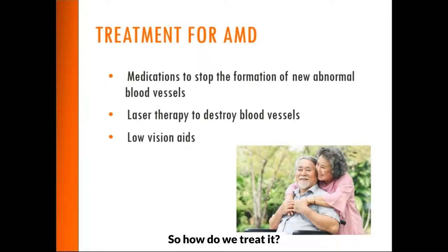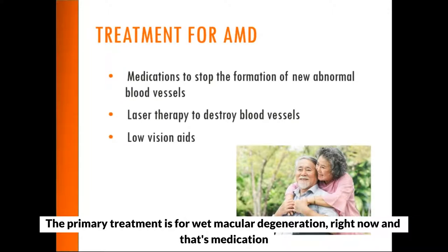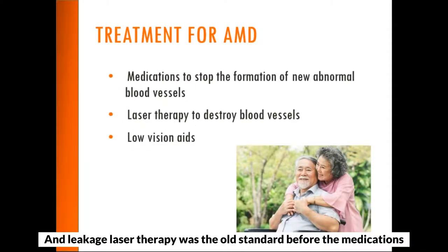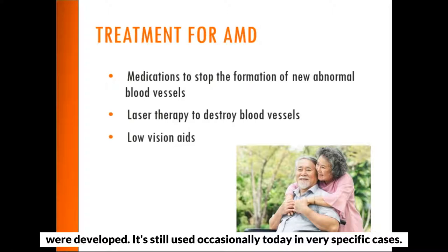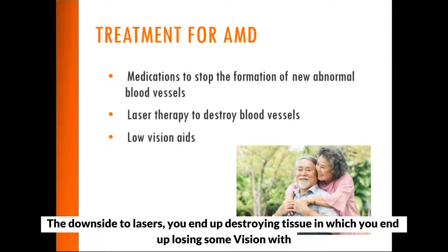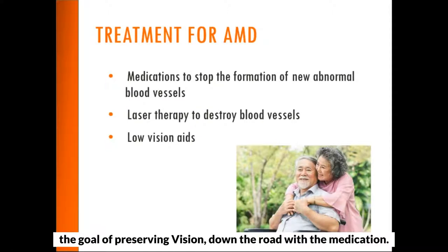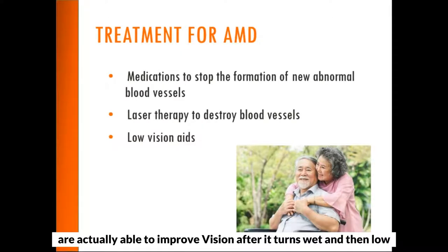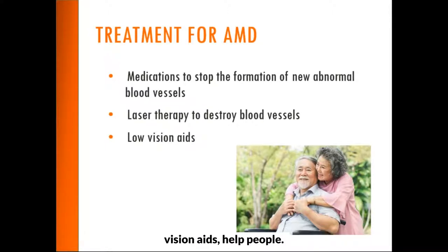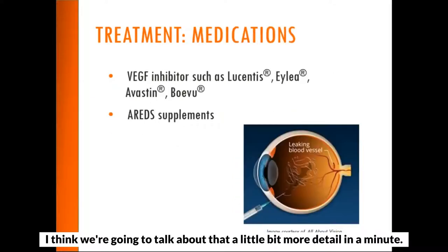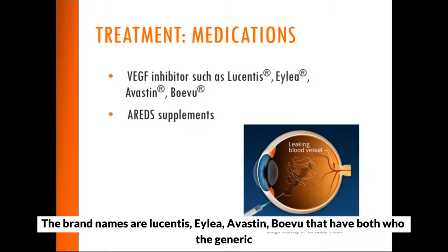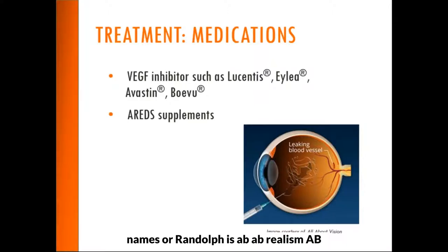The primary treatment right now is for wet macular degeneration — medication that actively treats those abnormal blood vessels and shuts down swelling and leakage. Laser therapy was the old standard before the medications were developed and is still used occasionally in very specific cases, but the downside is you end up destroying tissue, sacrificing some vision with the goal of preserving vision down the road. With the medications, most people are able to maintain their vision, and a great majority are actually able to improve vision after it turns wet. The medications that are injected go by the brand names Lucentis, Eylea, Avastin, and Vabysmo.